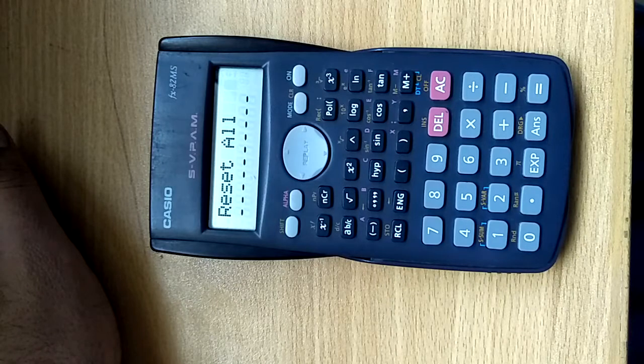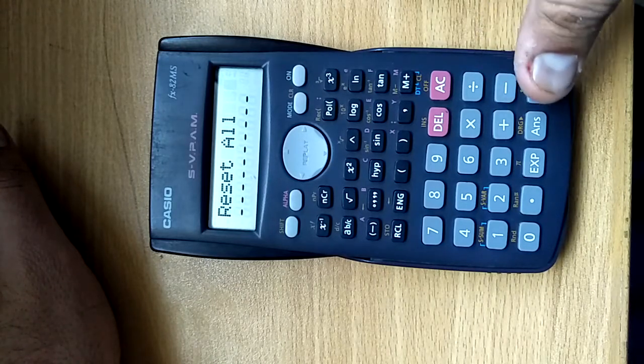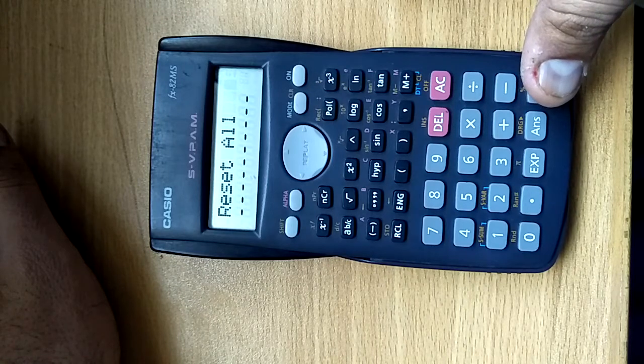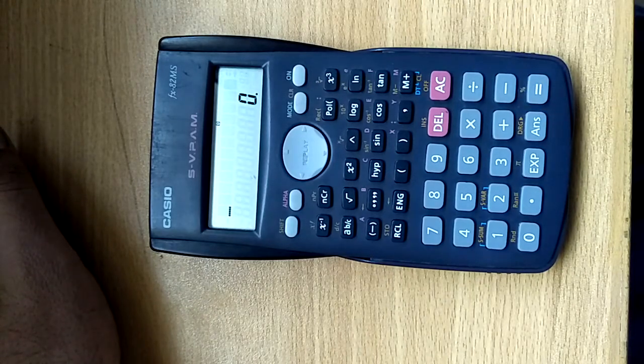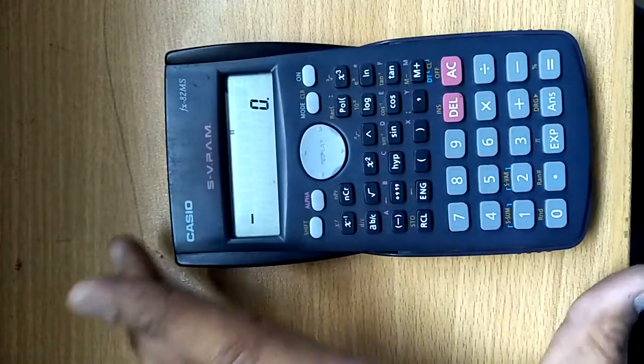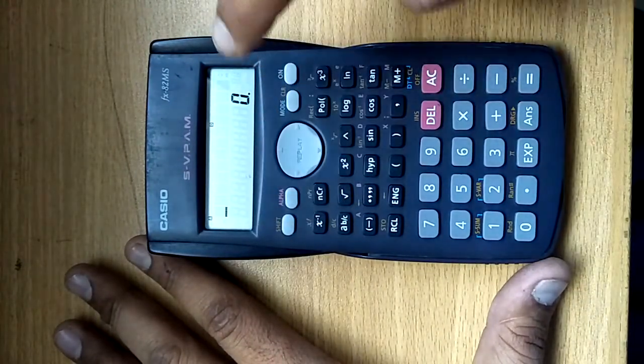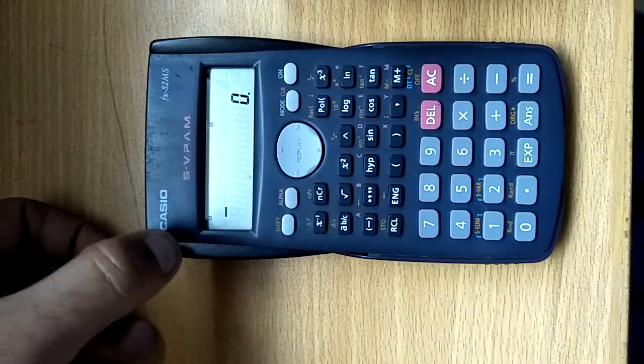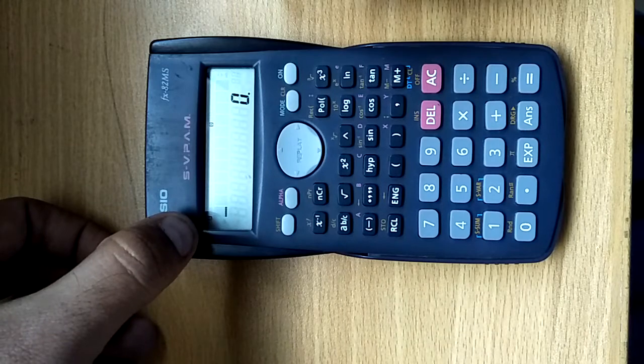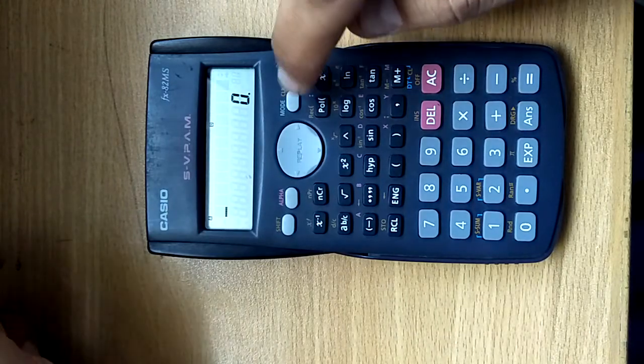Now your calculator is reset. Secondly, what you have to do: again press ALPHA. Press ALPHA, you will get the option, the icon over the top of the screen that is A. Then press MODE.